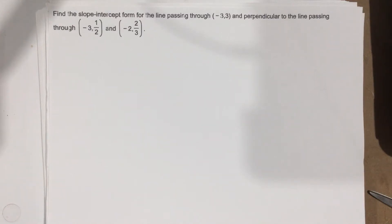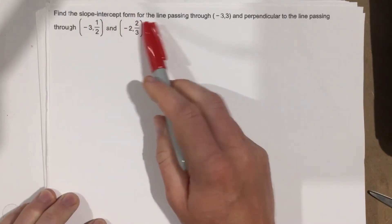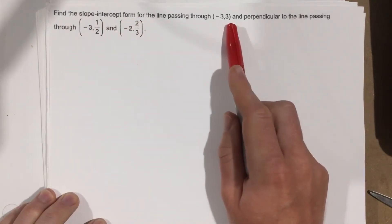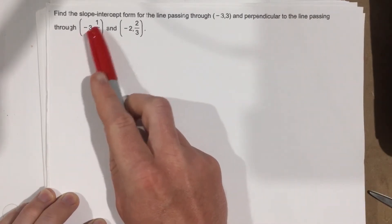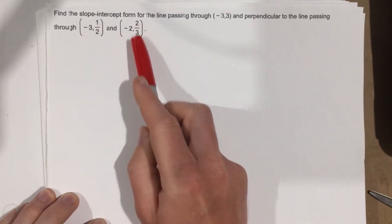This is problem number 5 from section 2.1. In this problem, they want us to find the slope-intercept form for the line passing through (-3, 3) and perpendicular to the line passing through (-3, 1/2) and (-2, 2/3).